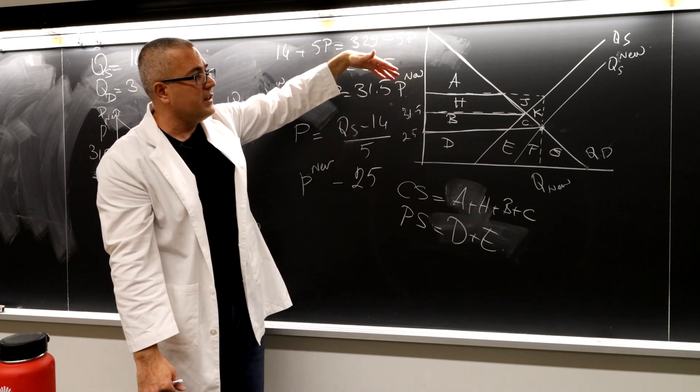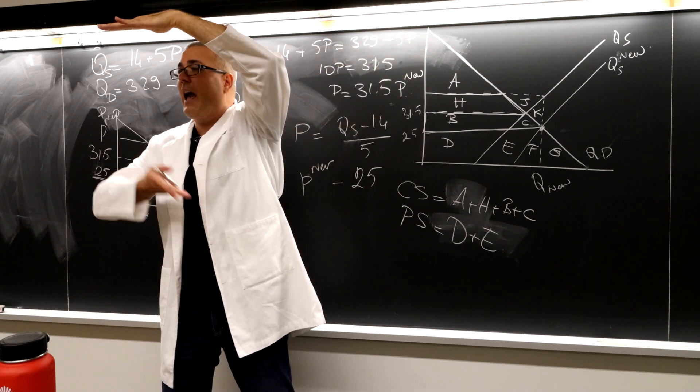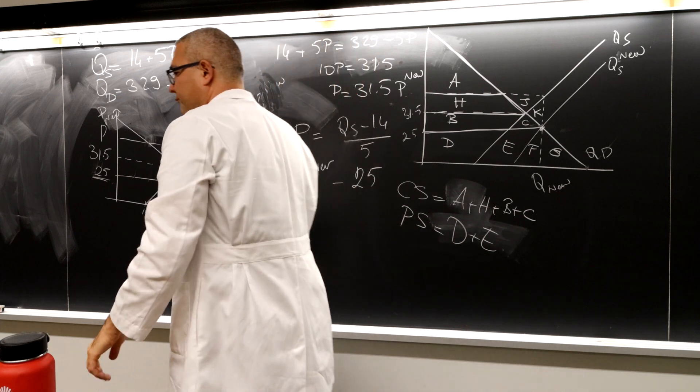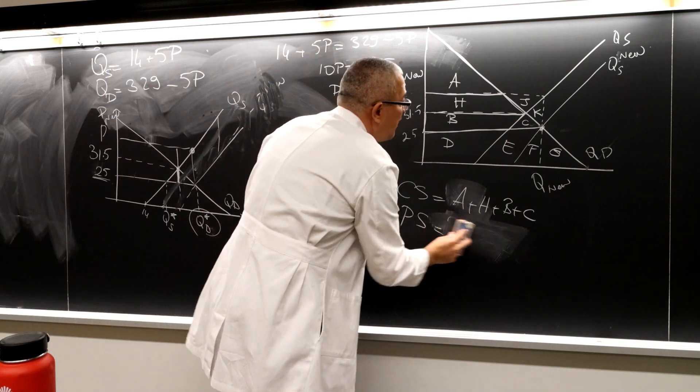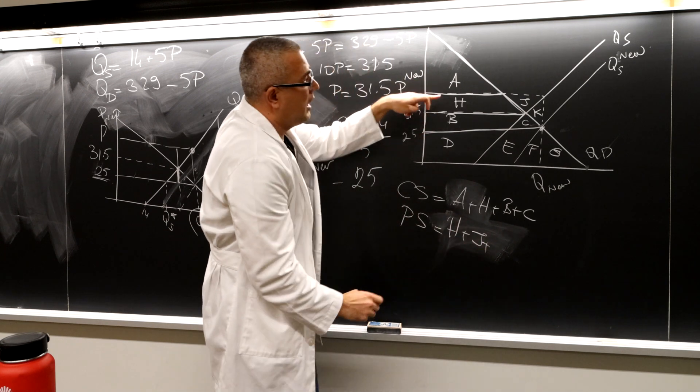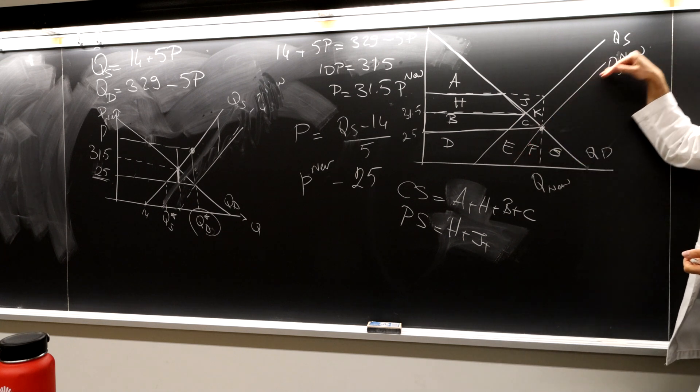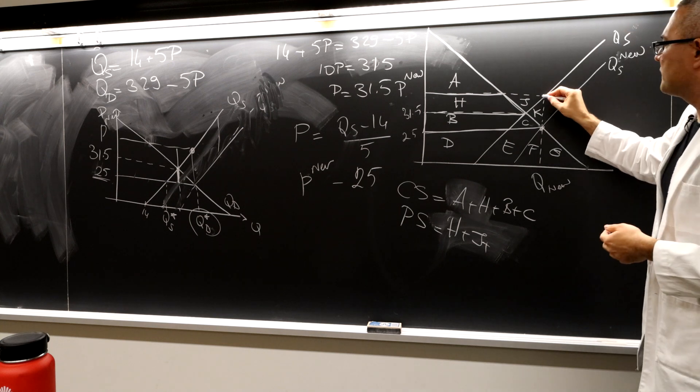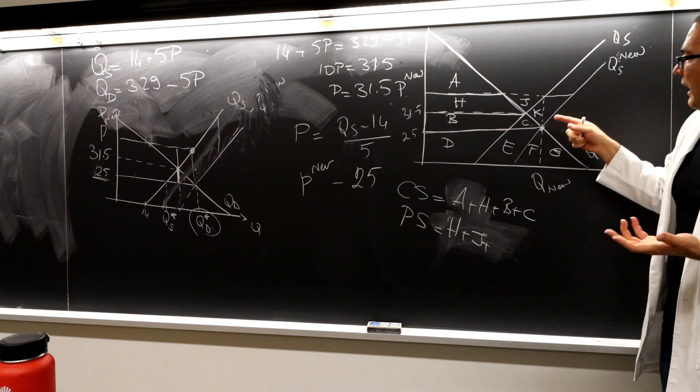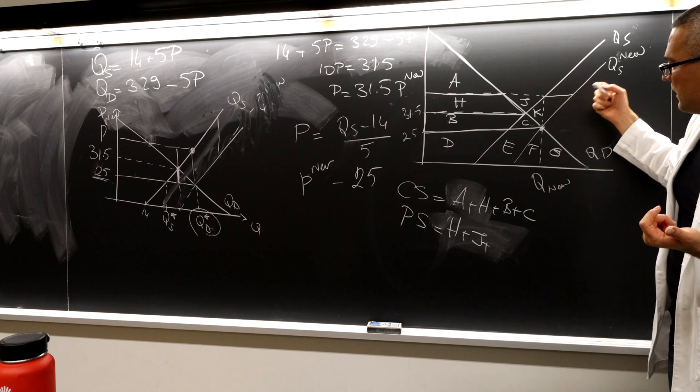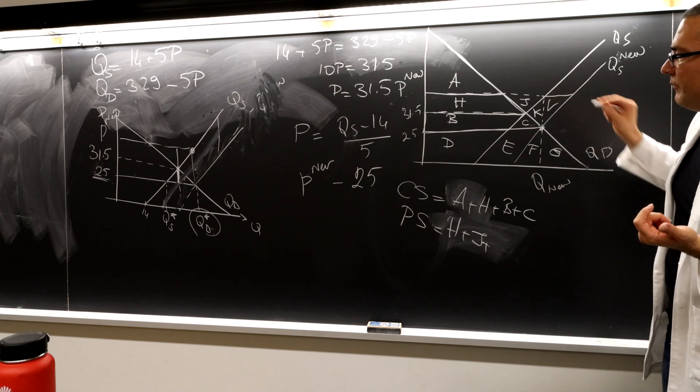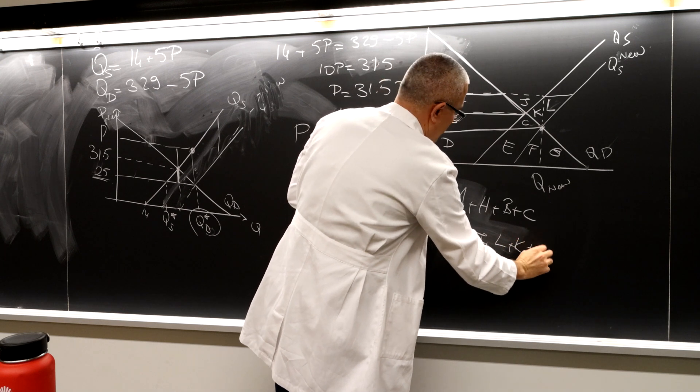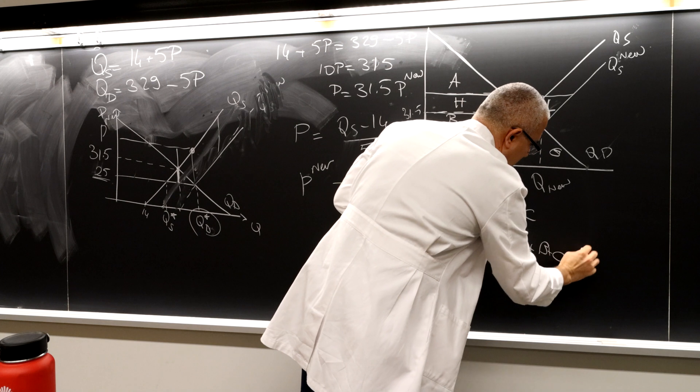When I calculate the producer surplus, again, the price line and the supply curve. So this area is then what? H and bunch of other things. By the way, where is the supply curve? Should I be worried about the new supply curve or the old supply curve? The new supply curve, obviously, because this is the supply. I need H, J, let's call it L. So I need H, J, L, K, B, C, D, and E.